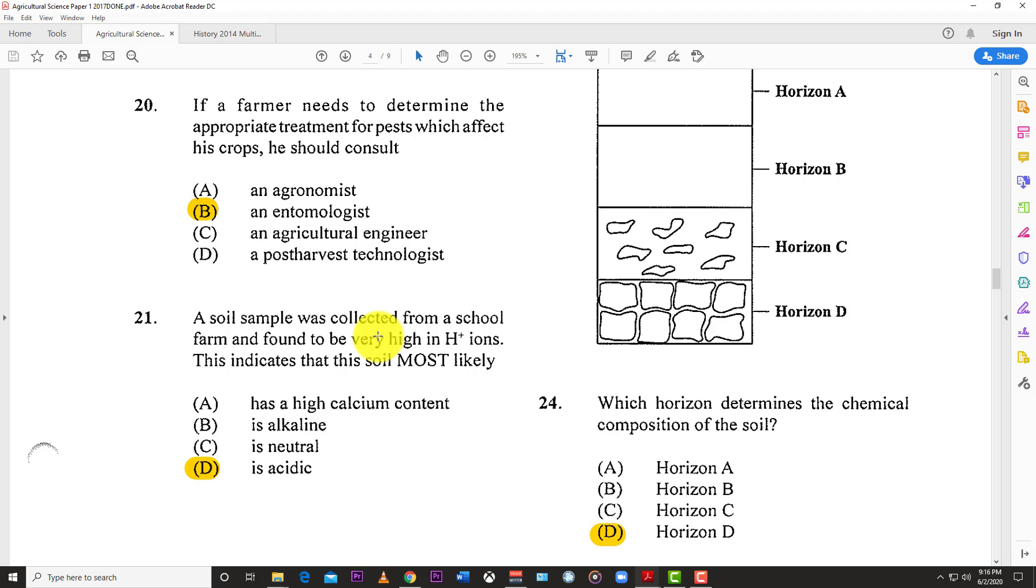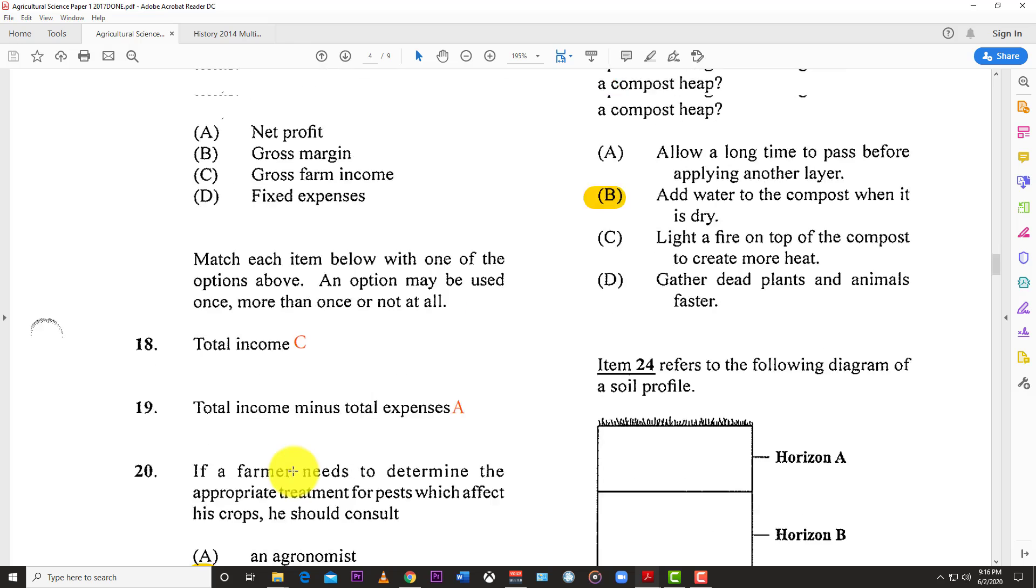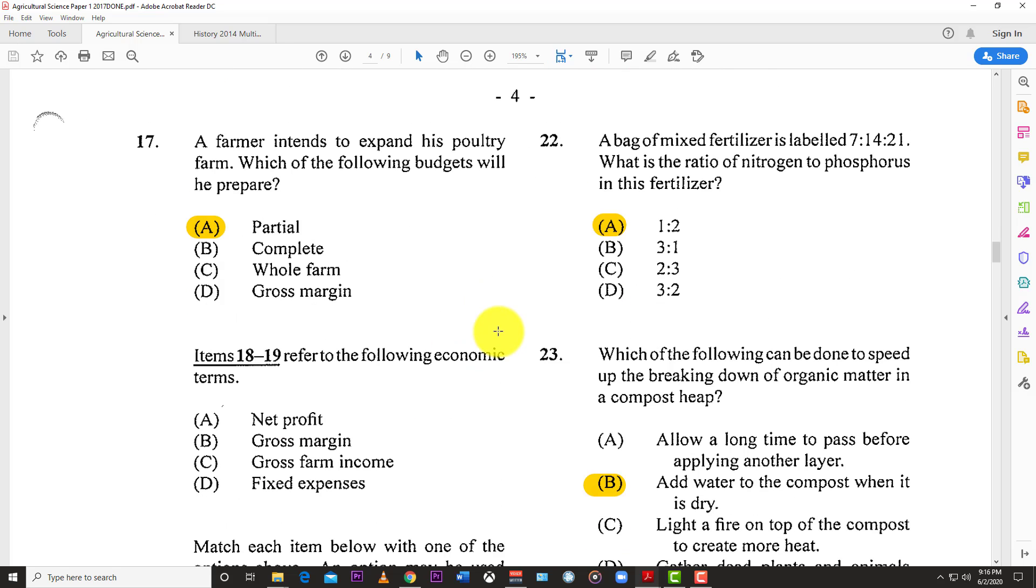Number twenty-one: A soil sample was collected from a school farm and found to have very high H+ ions. This indicates that the soil is most likely acidic. Number twenty-two: A mixed bag of fertilizer labeled 7-14-21. What is the ratio of nitrogen to phosphorus in this fertilizer?